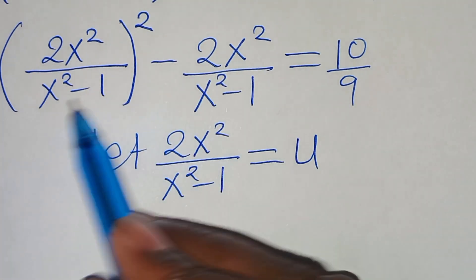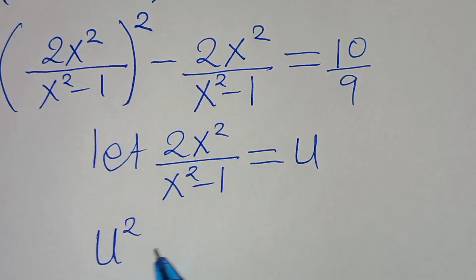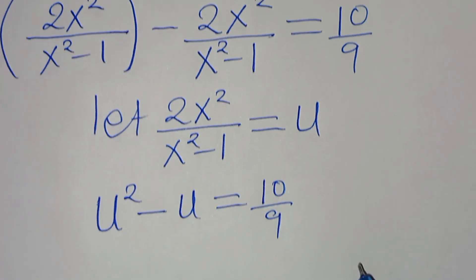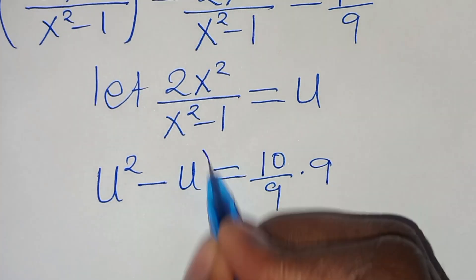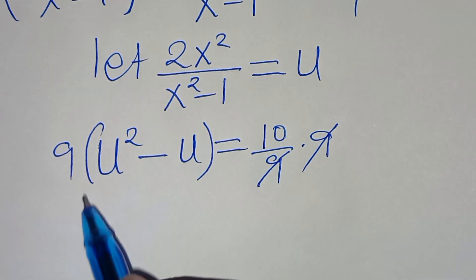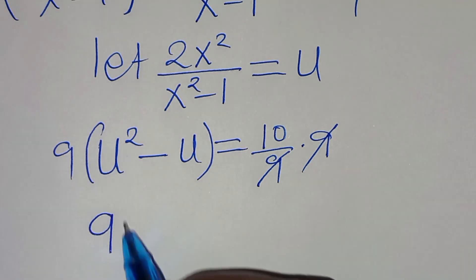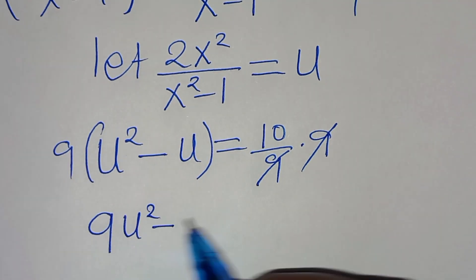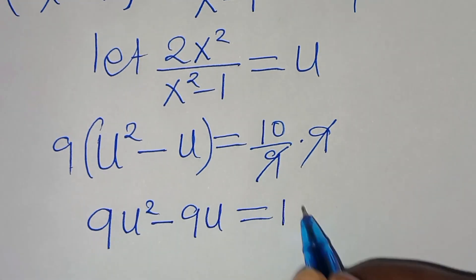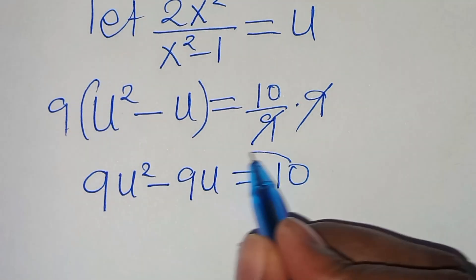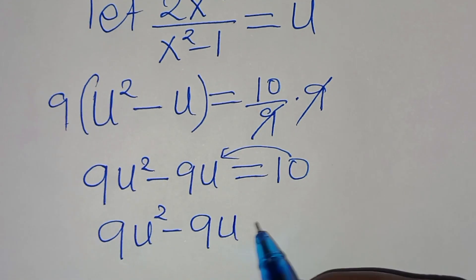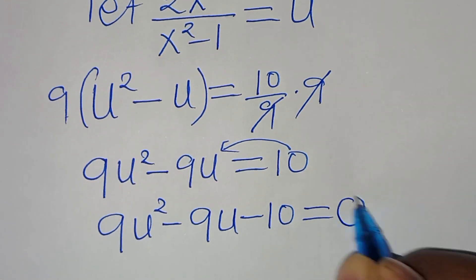Substituting u back into the equation, we have u² - u = 10/9. Let's multiply both sides by 9, so we get 9u² - 9u = 10. Bringing 10 to the left hand side: 9u² - 9u - 10 = 0.